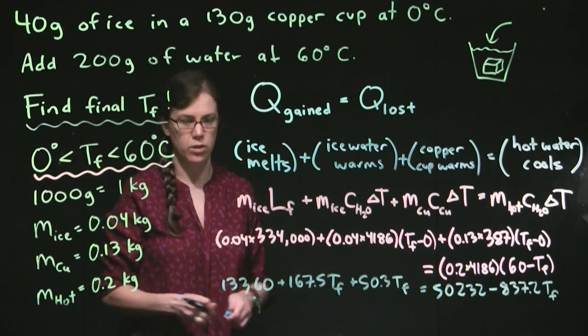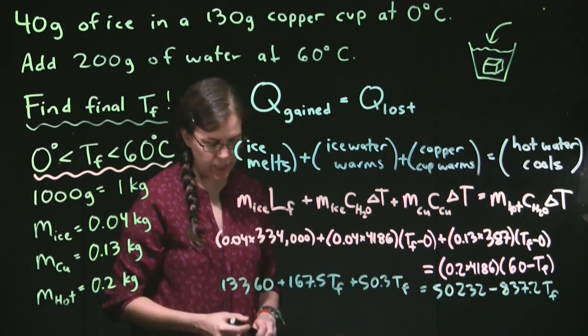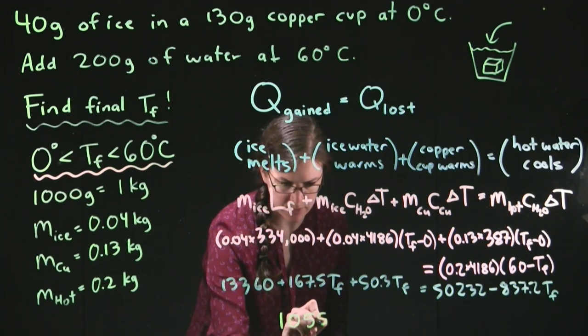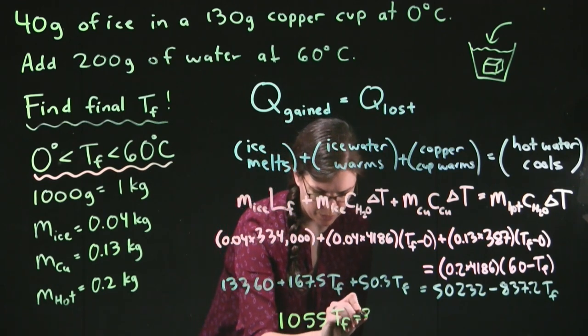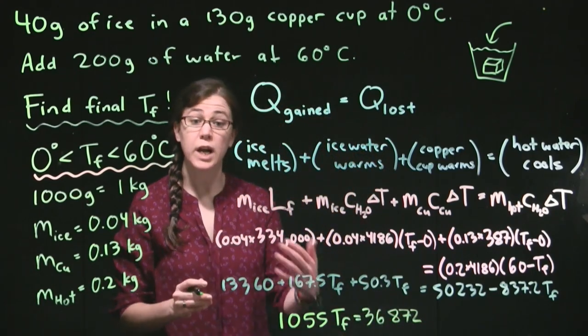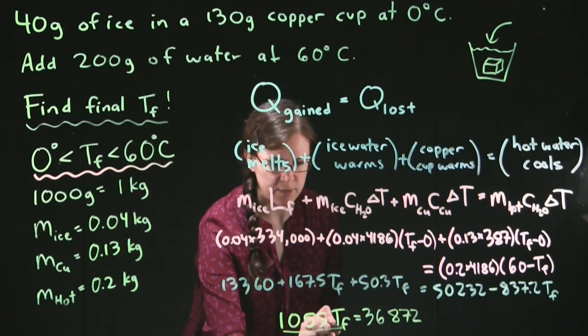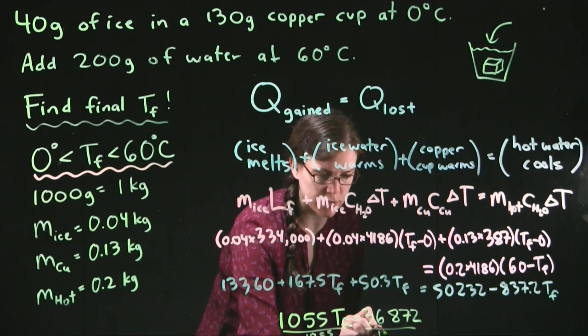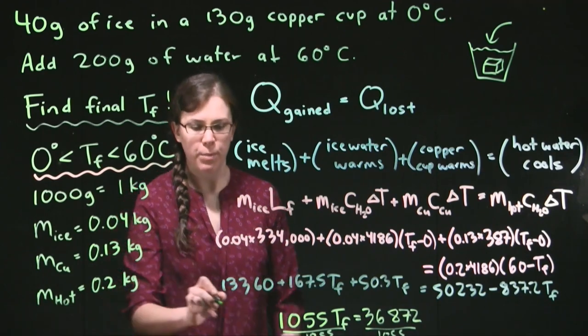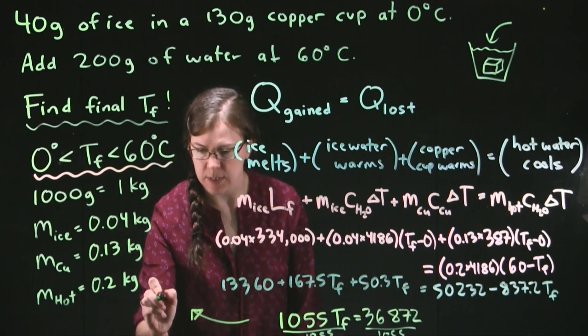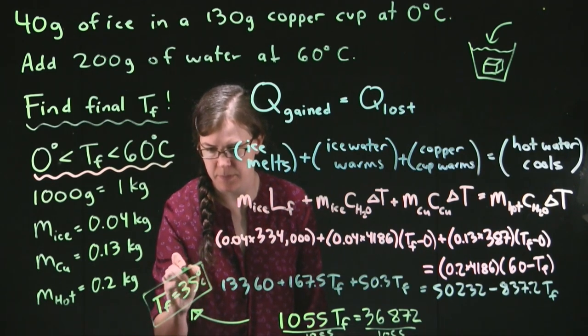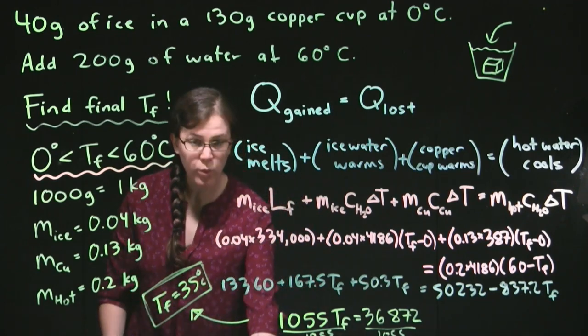So now the last thing that we have to do is get all of the T_finals over onto one side and all of the numbers that don't have T_final onto the other. So with that step, what we end up with is we have 1055 T_final is equal to 36,872. So we're going to divide both sides by 1055, and what we end up with is our final answer: T_final is equal to 35 degrees Celsius.